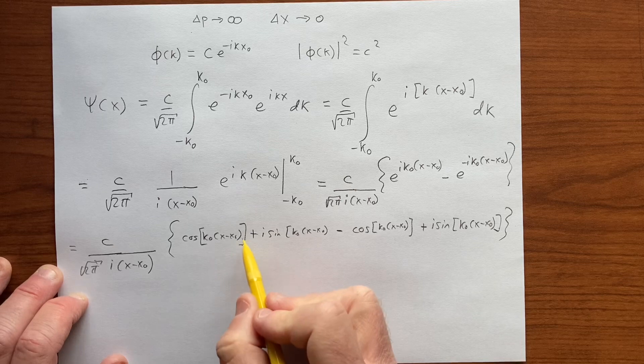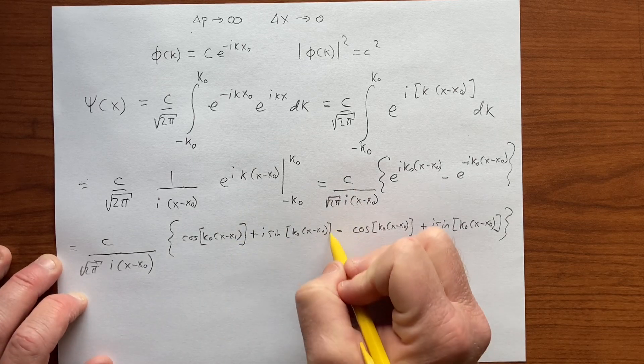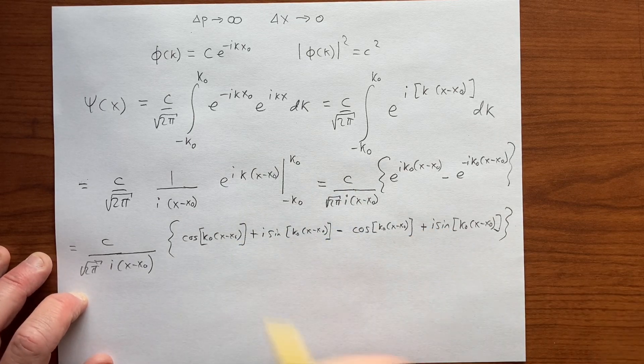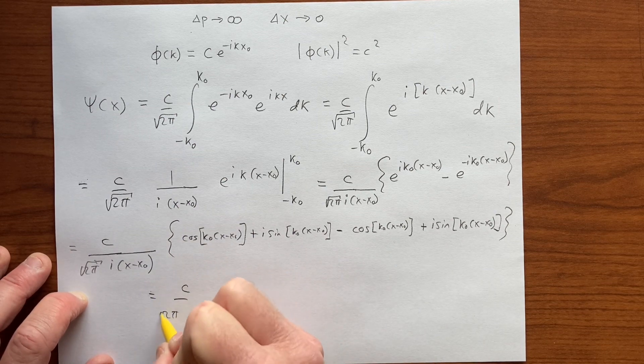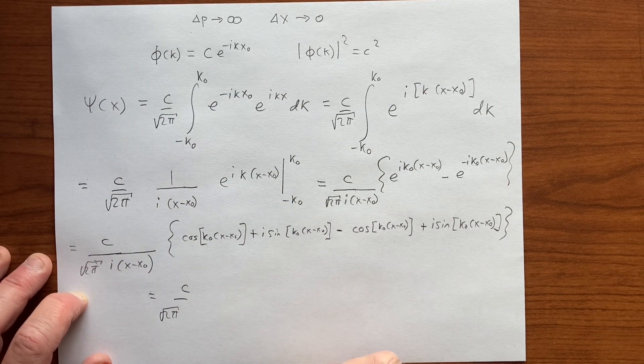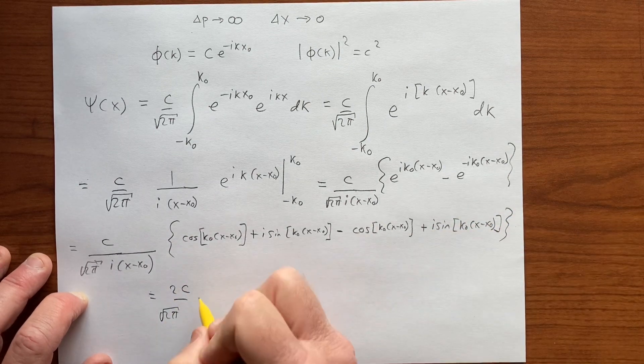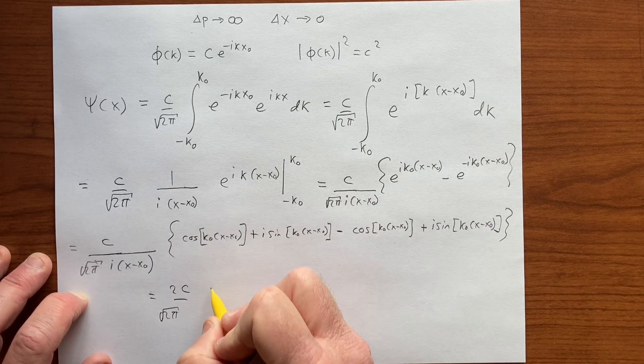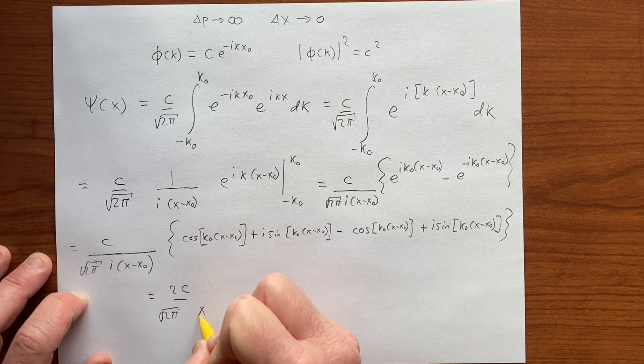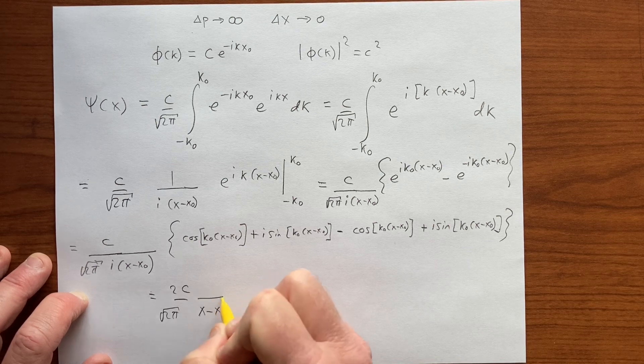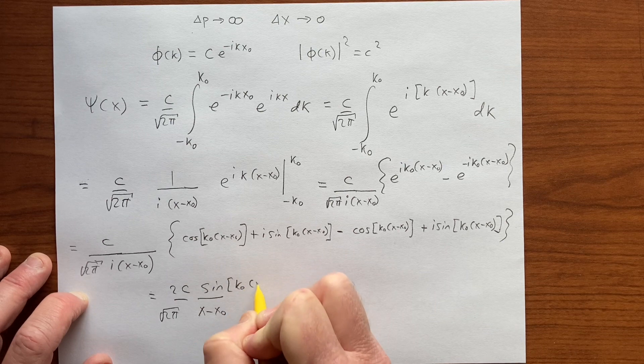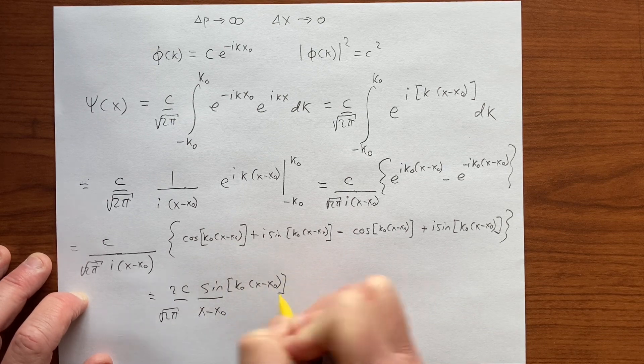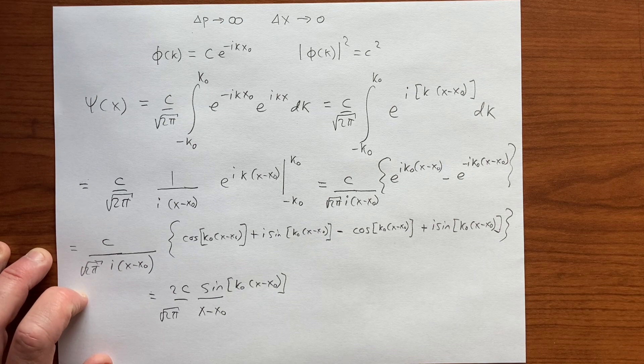The cosines cancel, we have 2i sine, and we divide by i, so we get c over square root of 2π. The key is (x minus x₀) in the denominator times sine of k₀(x minus x₀).